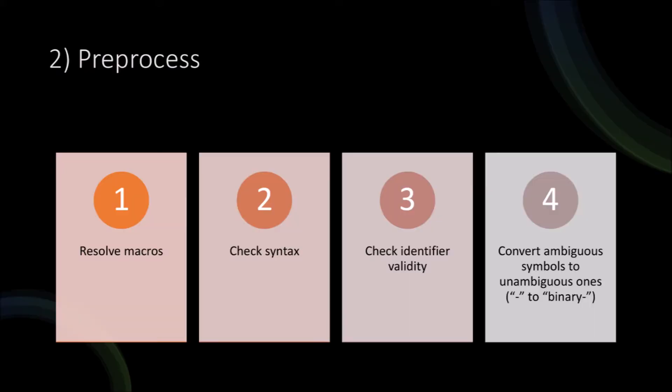Then we have the preprocess. The preprocess does four things: it first resolves macros, then it checks for syntax, then it checks the validity of the identifiers, and lastly it converts ambiguous symbols to unambiguous ones.